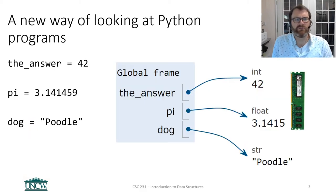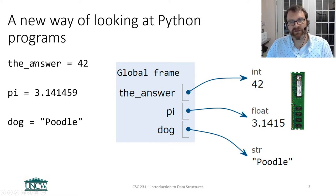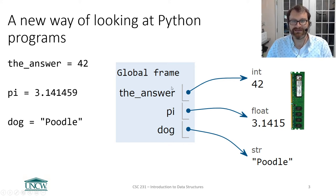We also introduced a new way of looking at Python programs in terms of what variables are and how they relate to memory. When you have a variable assignment, remember it evaluates right to left. Python creates a value — say 42 — somewhere in memory, turning on the ones and zeros that encode 42 as an integer. Then it assigns the variable to that. The variable is really a named bookmark pointing to the address in memory where the value lives.